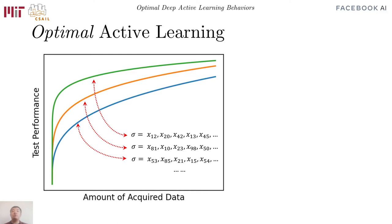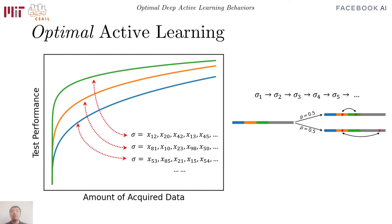Each strategy is parameterized differently, and new ones may be proposed at any time. Fortunately, a strategy only affects the performance via the realized data acquisition order, meaning that the search for the optimal order is sufficient. This is still intractably combinatorial, so we use simulated annealing with a local perturbation kernel.